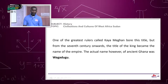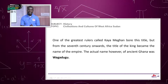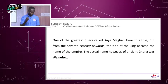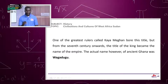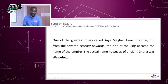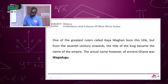One of the greatest rulers, called Kayamegan, bore this title. But from the 7th century onwards, the title of the king became the name of the empire. The actual name of ancient Ghana was Ouagadougou.